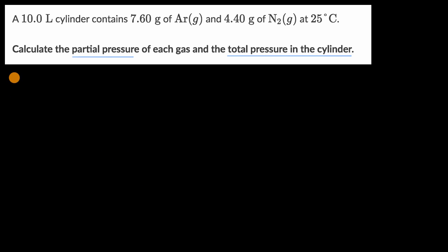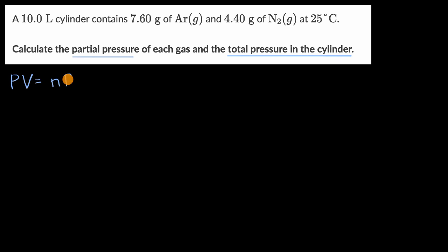You might imagine that the ideal gas law is applicable here, and it's applicable whether we're just thinking about the partial pressures of each gas or the total. The ideal gas law tells us that pressure times volume is equal to the number of moles times the ideal gas constant times temperature.